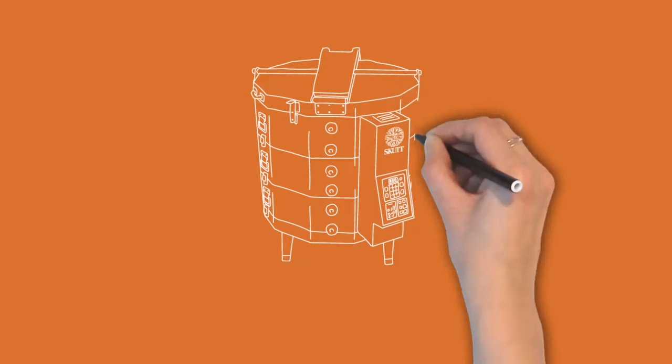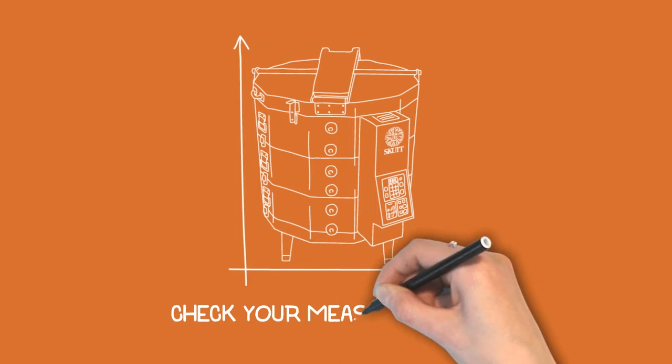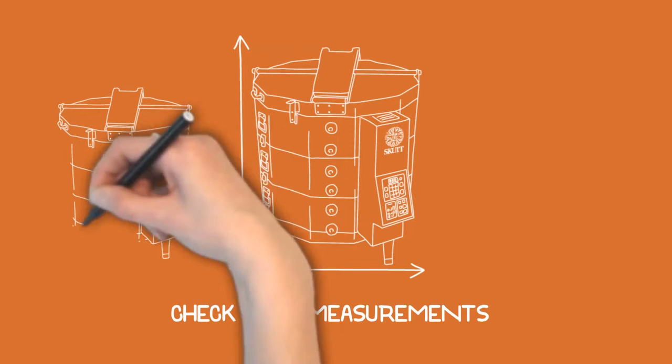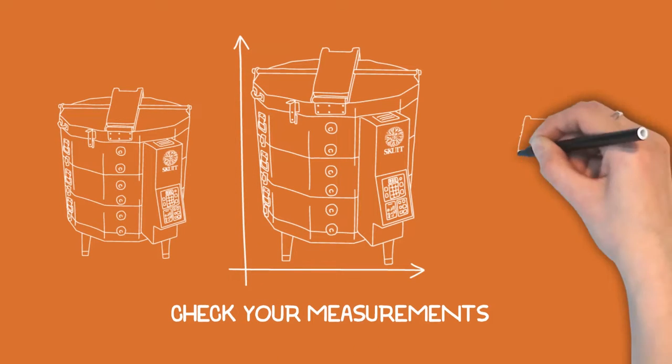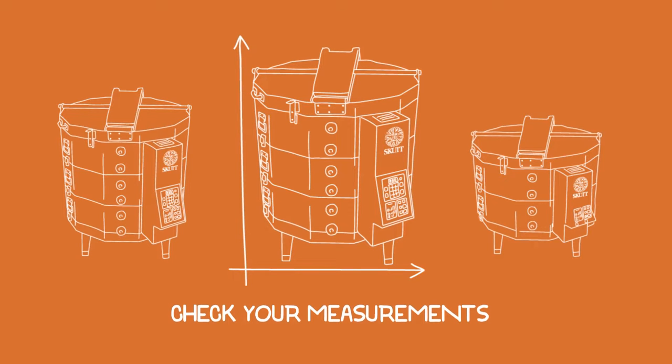The first thing you need to consider is the size of the kiln. Choose a kiln model that will fit the height and width of the pieces you wish to fire, as well as the number of pieces you want to fire in each load. Check the height and width of the various firing chamber sizes to determine the model that best suits your needs.